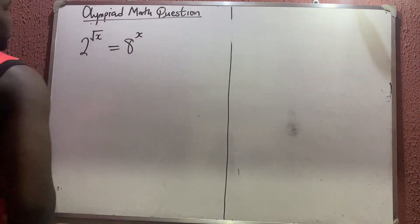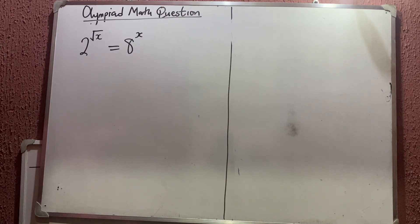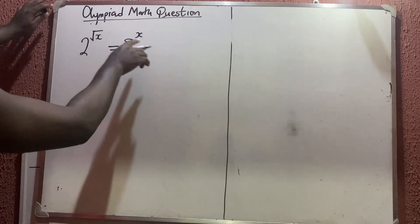Okay, let us quickly solve this Olympiad math problem. So this is a very simple equation. We have 2 raised to the power root x is equal to 2 raised to the power x. So what do we do? First of all, let us break down.